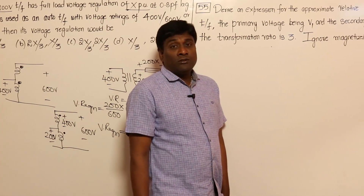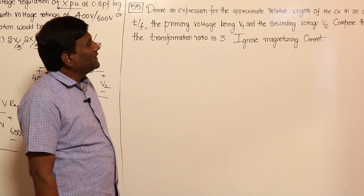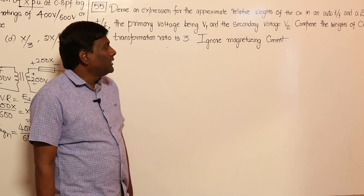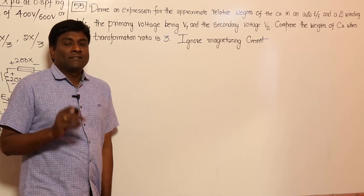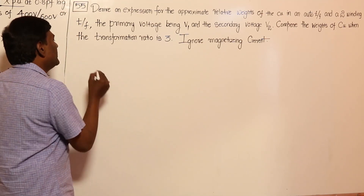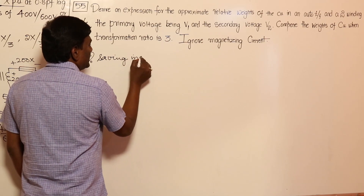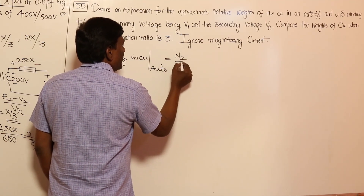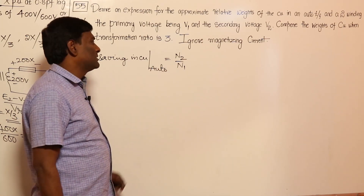Now let us look at the second problem, which is also a very good problem — given in ESDC one time. It asks for an expression for approximate relative weights of copper in an auto transformer versus a two-winding transformer, with primary voltage V1 and secondary voltage V2. The percentage saving in copper for an auto transformer is N2 by N1, or equivalently V2 by V1, and this fraction must be less than 1.